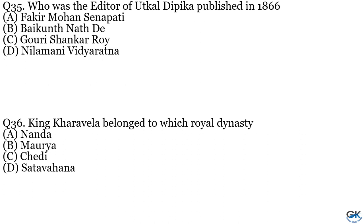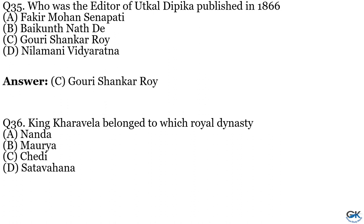Question No. 35: Who was the editor of Utkala Deepika, published in 1866? Option A: Fakir Mohan Senapati. Option B: Vaikunthanath. Option C: Gauri Sankar Roy. Option D: Nilamani Vidya Ratna. The answer is Option C, Gauri Sankar Roy.